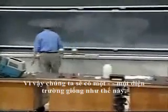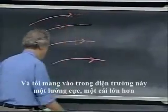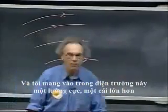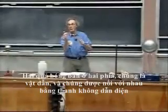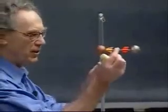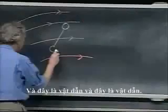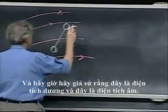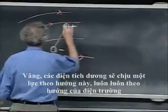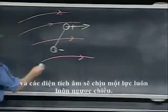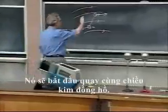So let's have an electric field like so. And I bring into this electric field a dipole — a biggie. This is the one I'm going to use for this demonstration: ping-pong balls on either side, they are conducting, and they are connected with a rod which is not conducting. Let's suppose this is positive and this is negative. The positive charge will experience a force in the direction of the electric field, and the negative charge will experience a force always upstream. And now there is a torque on this, and when there is a torque on this dipole it will start to rotate clockwise.